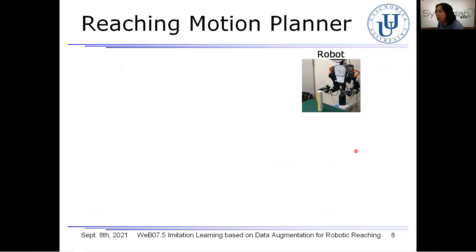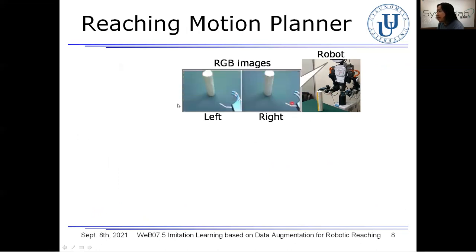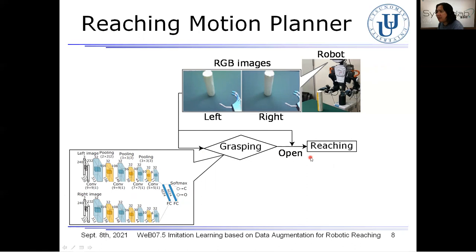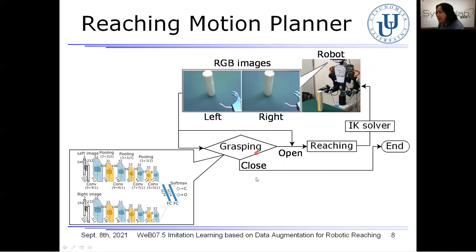Let me talk about the overall flow of robotic reaching. Given the robot equipped with a stereo camera, right and left images are obtained from the sensor. These two images are then fed as inputs into the grasping classifier, which results in a hand motion — either open or closed — for the input images. If the classification result is open, the images are further fed as input into the reaching motion planner. Afterward, the hand position is planned as the motion output and the robot solves inverse kinematics so as to move the hand to the planned position. Finally, the robot grasps the target object when the classification result is closed.